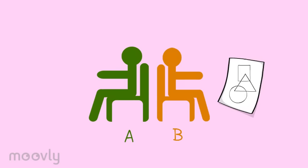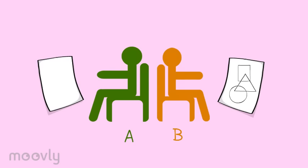Person B will be the first to make an abstract drawing that shows simple shapes. Person A will try to recreate this drawing based on verbal instructions from person B. Person B starts with describing his drawing.